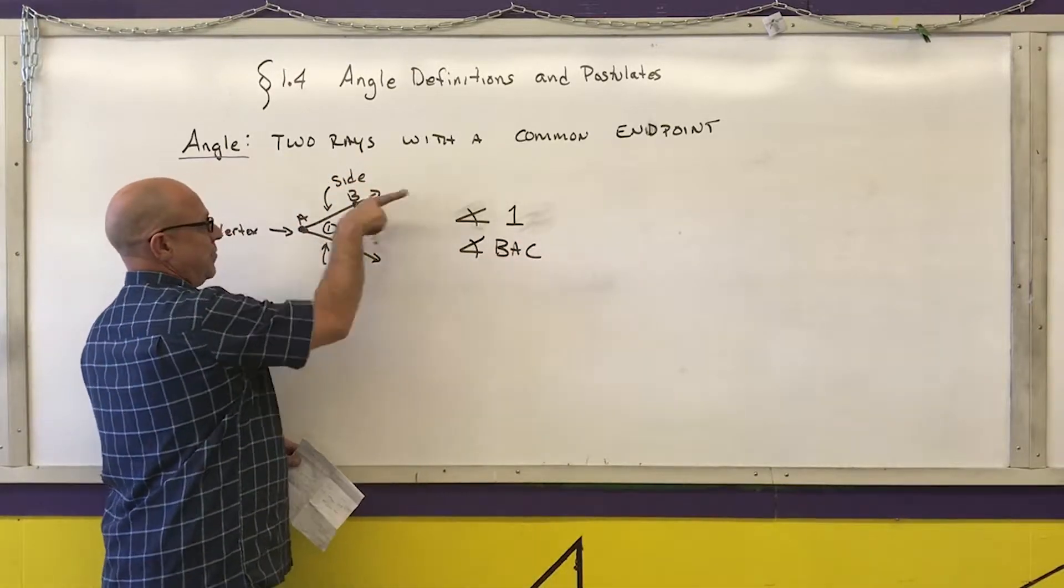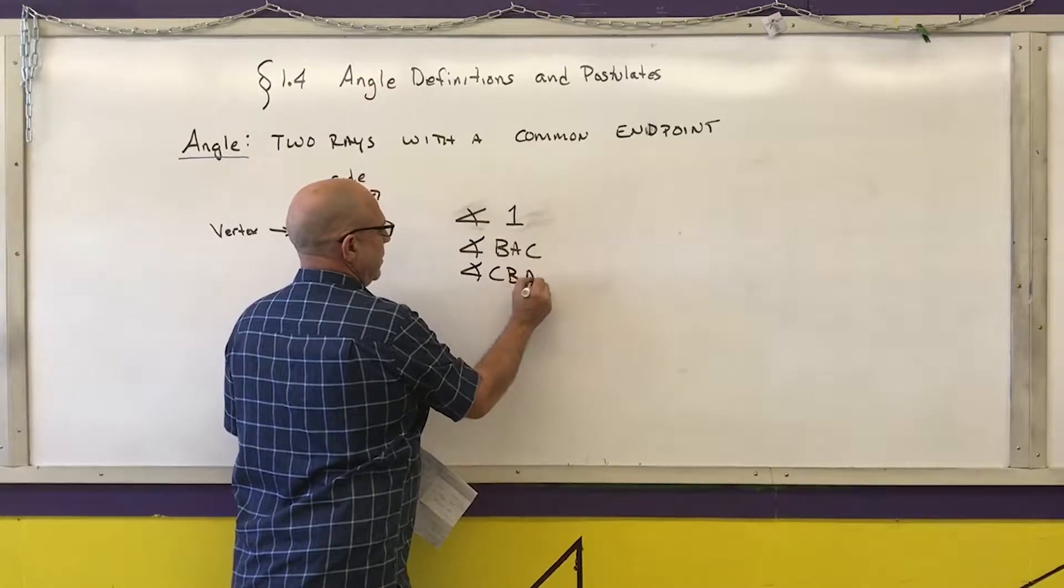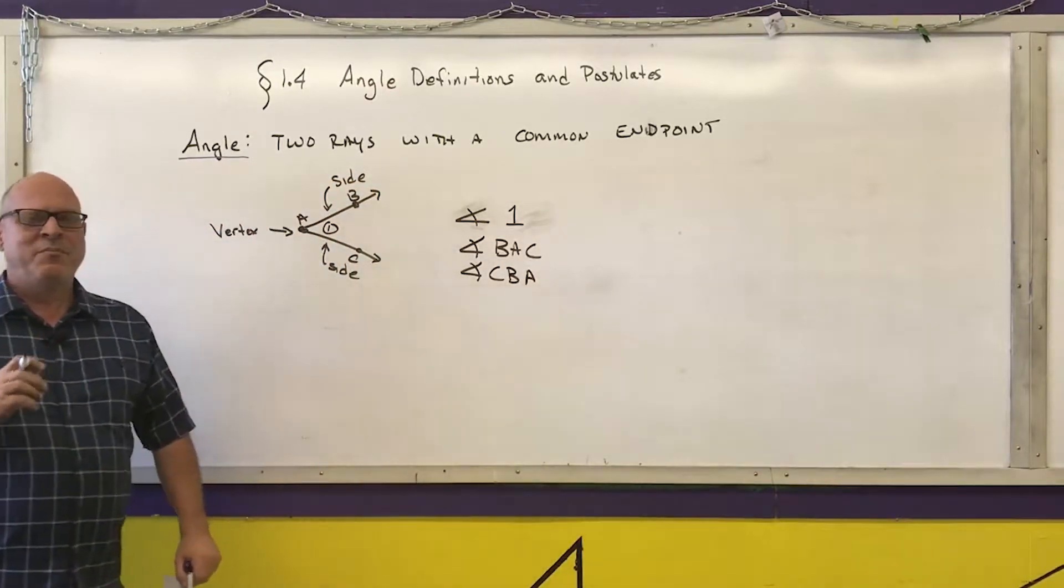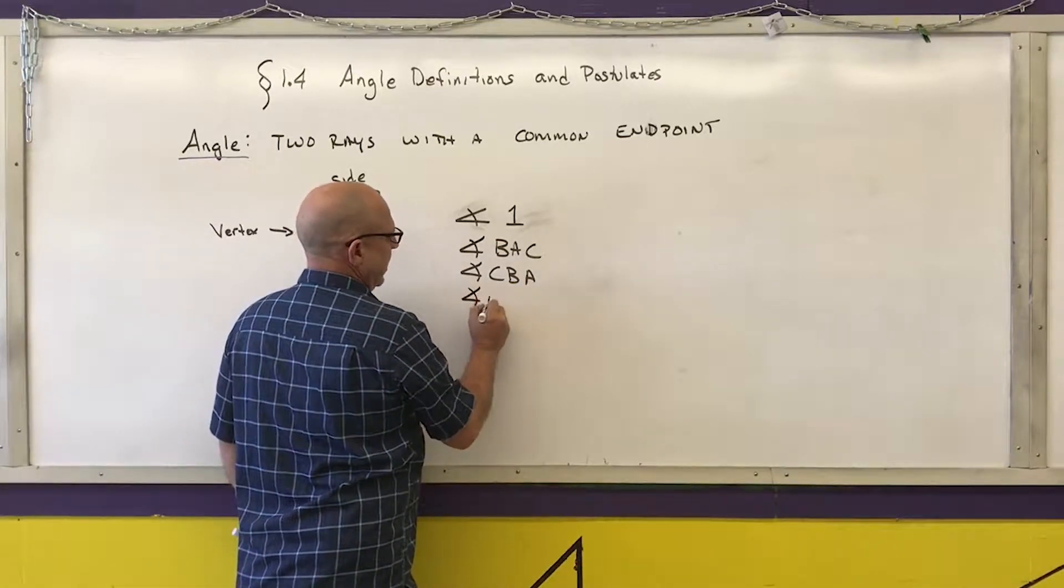I can name it in the opposite direction, angle CBA. Or, if it is unambiguous, I can call it just by its vertex. I can call this angle A.